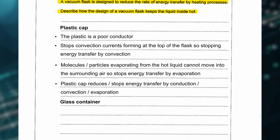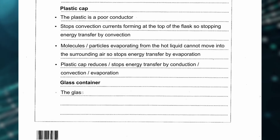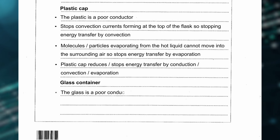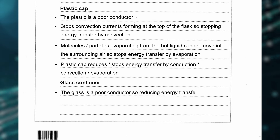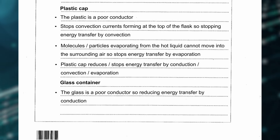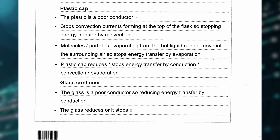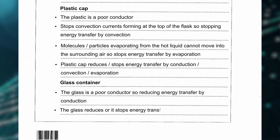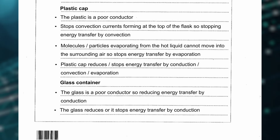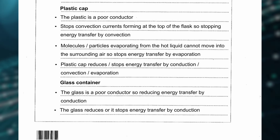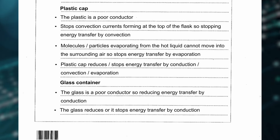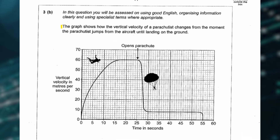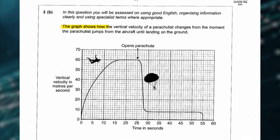For the glass container, it wants you to state that the glass is a poor conductor, so reducing energy transfer by conduction. Secondly, that the glass reduces or stops energy transfer by conduction. If you explain all of these points in a coherent and scientific manner, you'll get all 6 marks for this question.